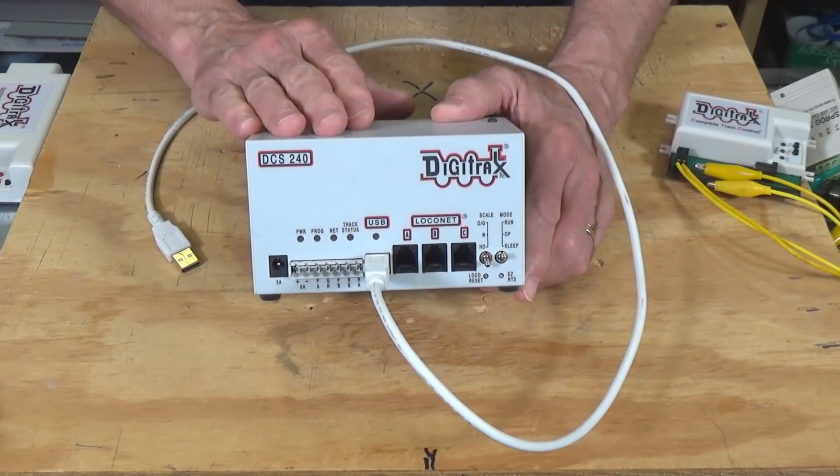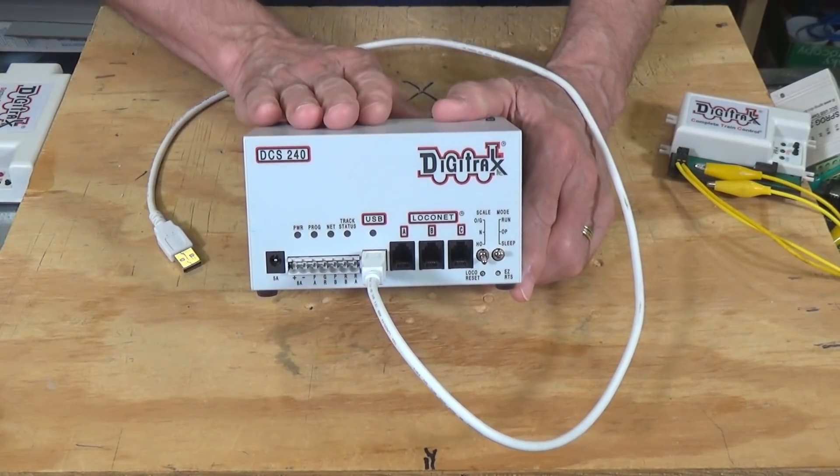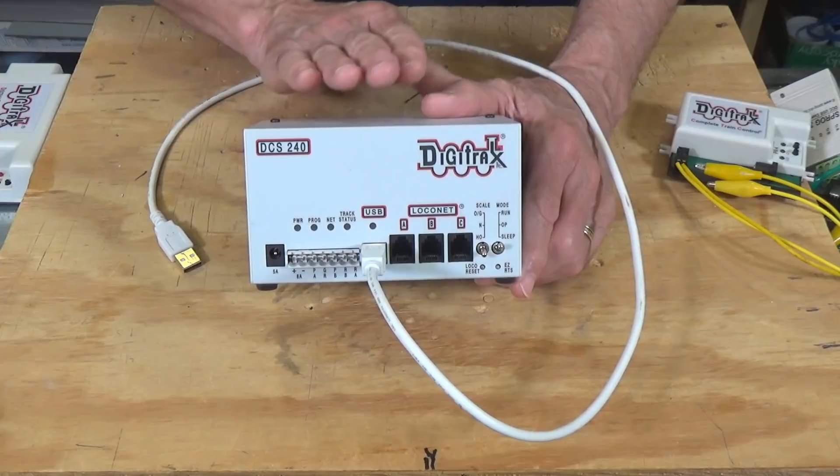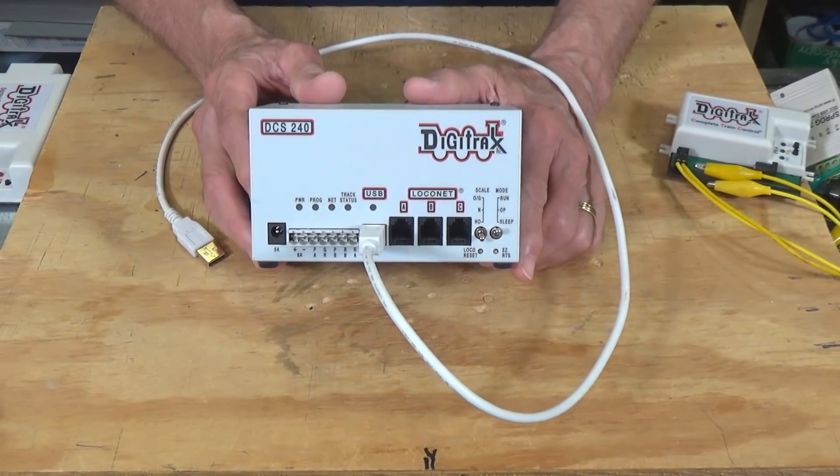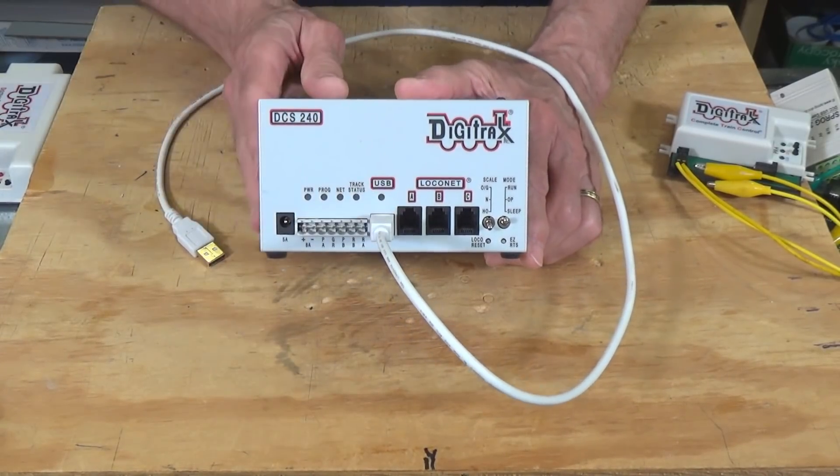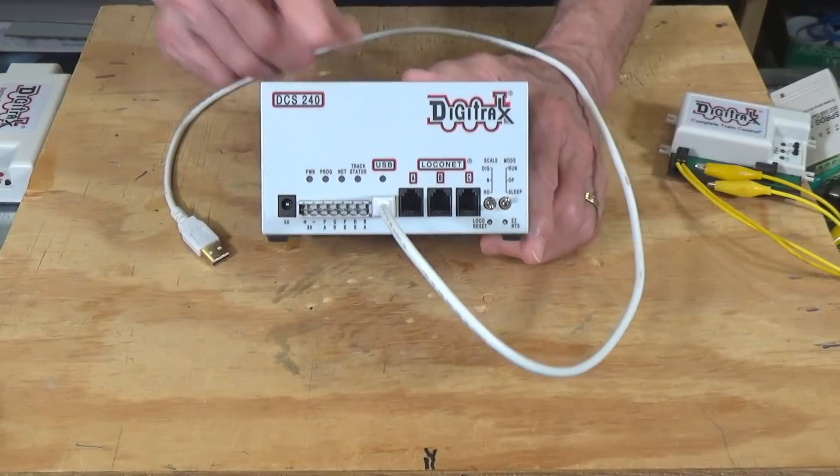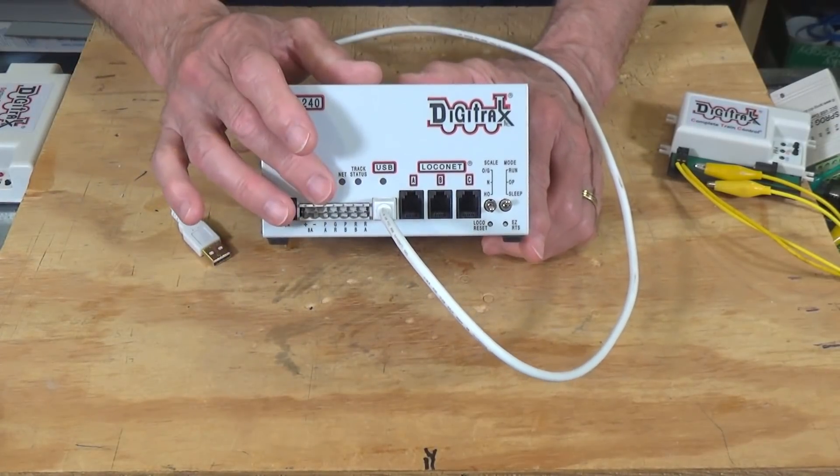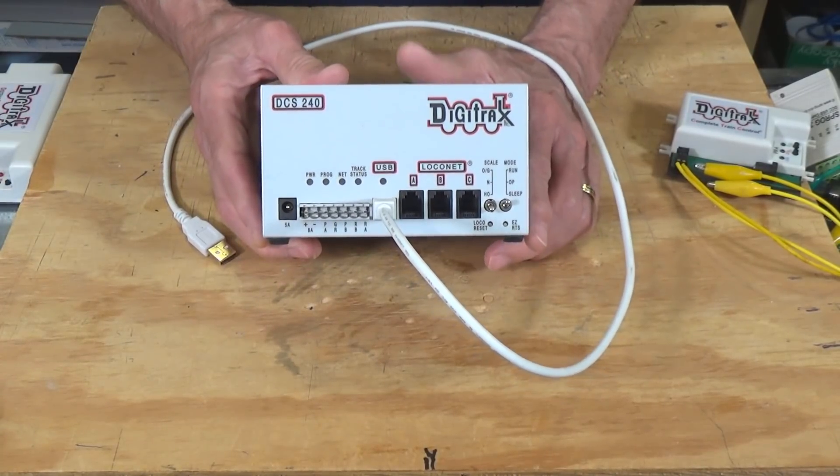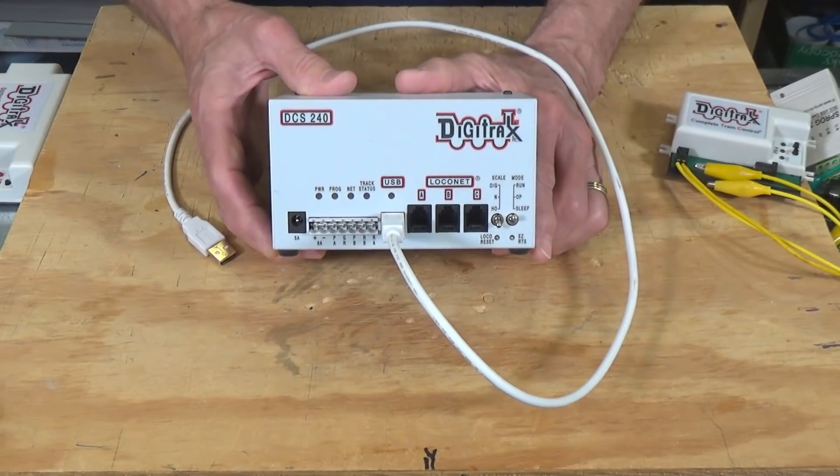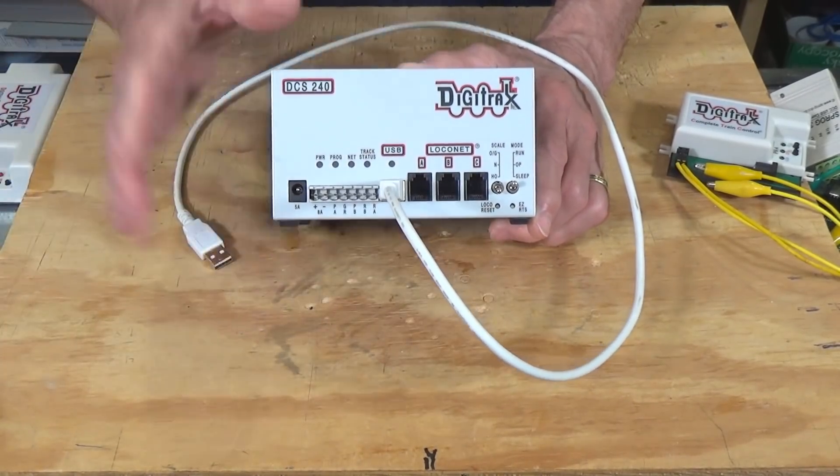Now, there's a lot of ways that this can be very useful because you can use that to program decoders on your programming track, programming on the main. You can upgrade your various firmware in your command station, your boosters, and your throttles, and other devices that are upgradable in that way. So it makes it very easy and very quick. And like I said, the DCS240, the DCS210, the Zephyr, I believe all now come with a USB interface built into them. So it makes it cheaper and easier than ever to go ahead and start using a program like JMRI Decoder Pro to do your programming. So all you have to do is plug that in, provide your power.